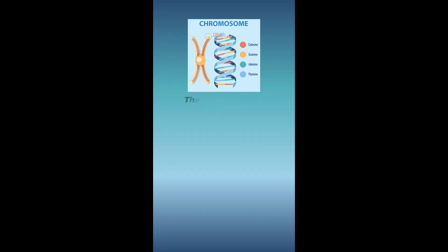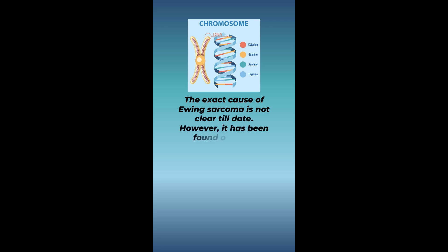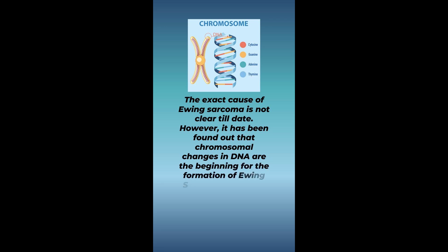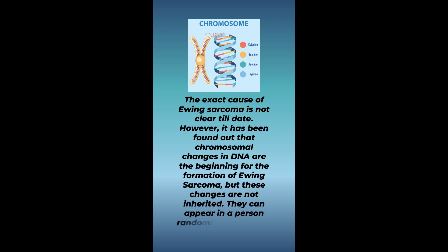The exact cause of Ewing sarcoma is not clear to date. However, it has been found that chromosomal changes in DNA are the beginning for the formation of Ewing sarcoma, but these changes are not inherited. They can appear in a person randomly without any reason.